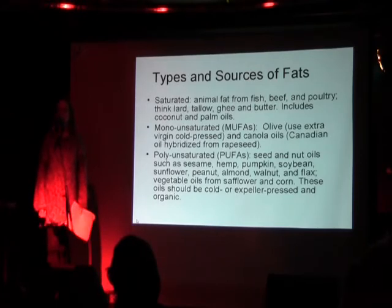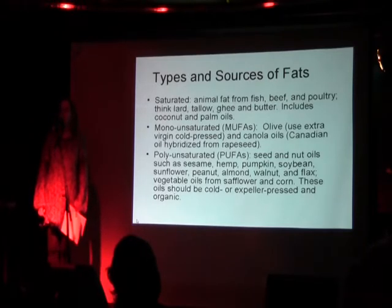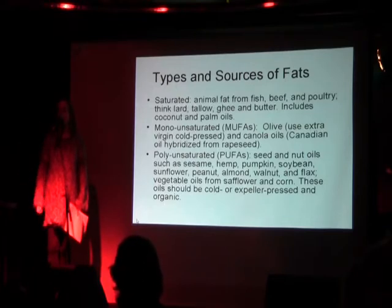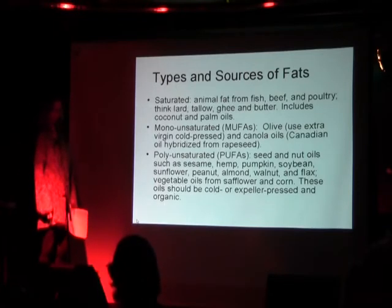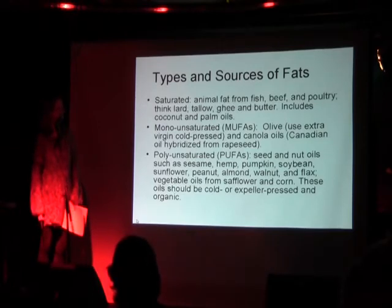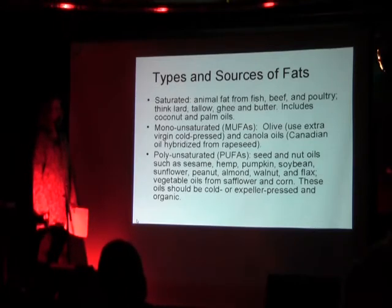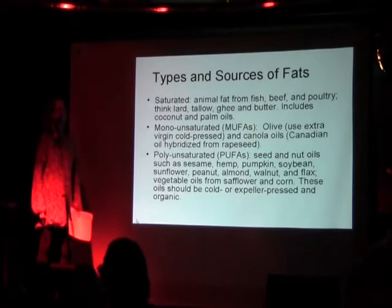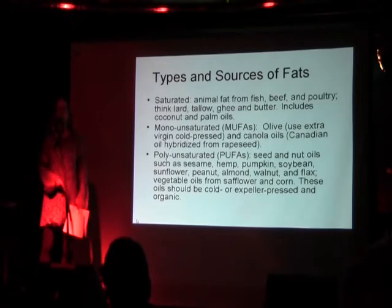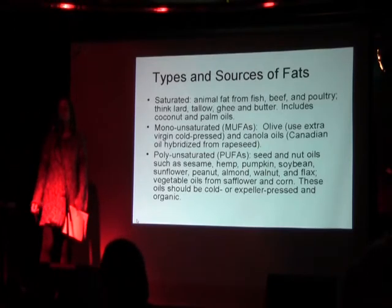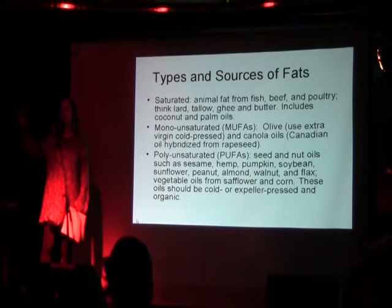After heating canola up, it's like a trans fat. Down south and in many restaurants, people are reusing the same oil over and over. Polyunsaturated fats include seed and nut oils — sesame, hemp, pumpkin, soybean, flax, sunflower, peanut, almond, safflower, and corn. These should be cold or expeller pressed, not the typical store-bought stuff. Remember, heat and light will make oil go rancid — the stuff sitting in clear plastic containers at the store is very unhealthy. It's already rancid.